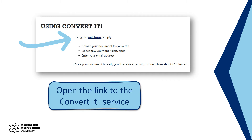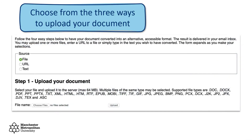Convertit is easy to use. Start by opening the link to the Convertit service, then choose from the three ways to upload your document. You can upload a file directly from your computer, insert a web address link for the document you wish to convert, or copy and paste text directly into the form.